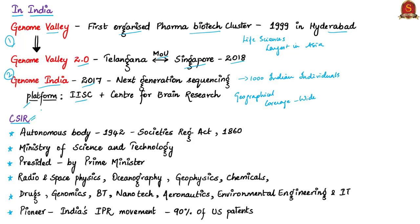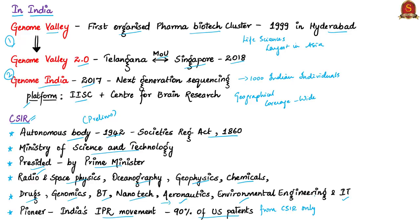Let us conclude with key facts about CSIR — the Council of Scientific and Industrial Research. It was established as an autonomous body under the Societies Registration Act of 1860 in 1942, and works under the Ministry of Science and Technology. The President of CSIR is the Prime Minister of India. CSIR covers a wide spectrum from radio and space physics, oceanography, geophysics, chemicals, drugs, genomics, biotechnology, and nanotechnology to mining, aeronautics, instrumentation, environmental engineering, and information technology. CSIR is a pioneer of India's intellectual property rights movement, and is granted 90% of US patents granted to any Indian publicly funded R&D organization.